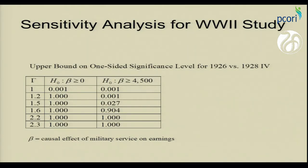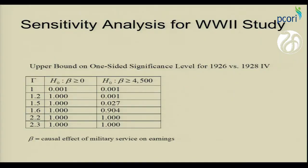This shows the results for the World War II study. If we test whether military service decreases earnings, at gamma equals one — treating the IV as valid — we see a significant effect. But if we allow for just a little bias, where one unit in a pair had 20% higher odds of being encouraged due to an unobserved covariate, we no longer have the inference that military service decreases earnings. Although we do still have evidence that military service doesn't raise earnings by $4,500, as the raw comparison suggested.